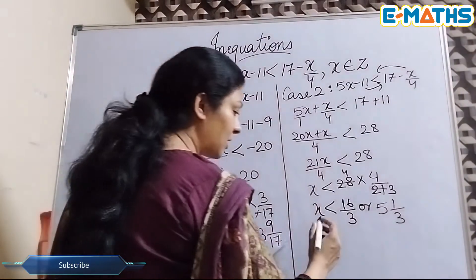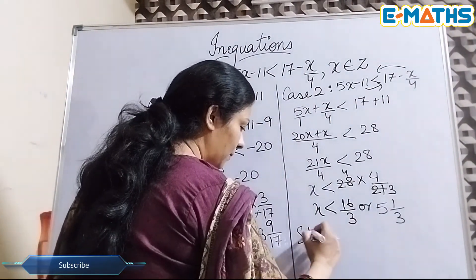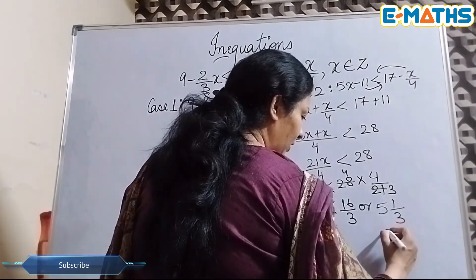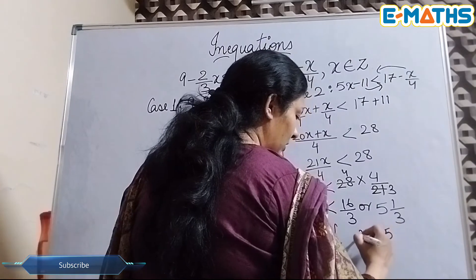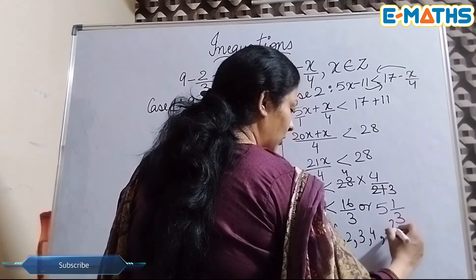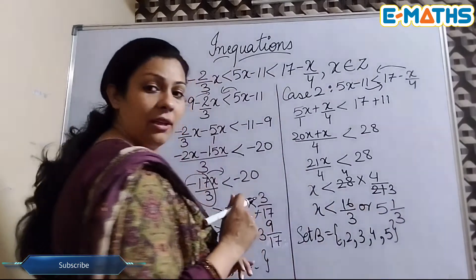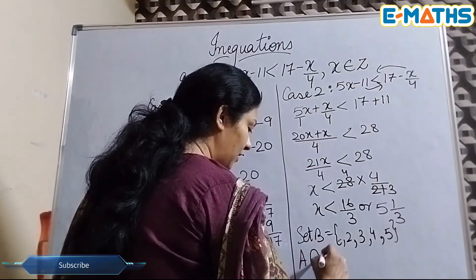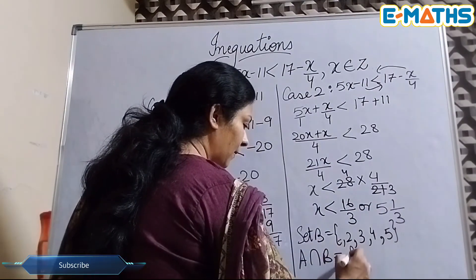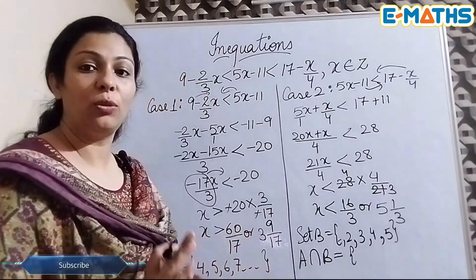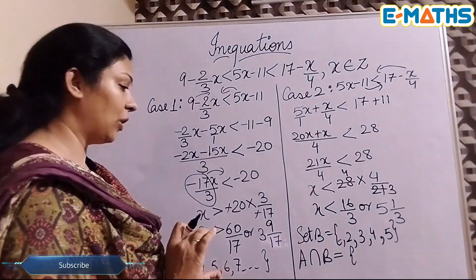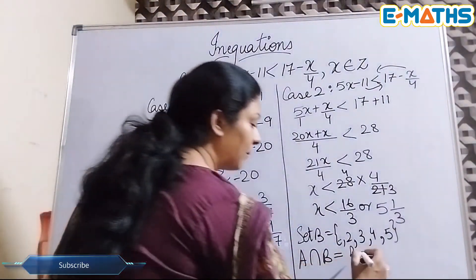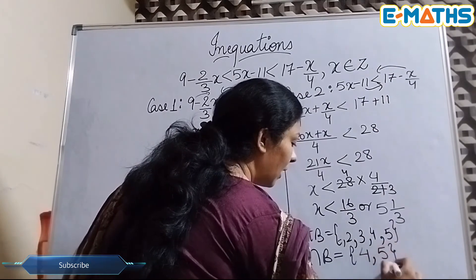So we will be having numbers smaller than this. So our set B will be less than this 5. So we'll start from 5 here. We will be having 5, 4, 3, 2, and so on on the left hand side. Now we have our set A, we have our set B, we need to find the intersection. So as I told you, in intersection we need to have the common element. So here if you see, we have 4 here and there also, and 5 also. That means our intersection will have 4 and 5.